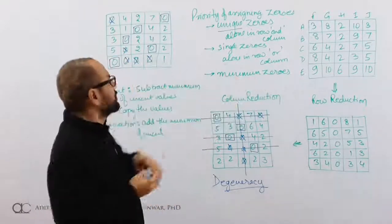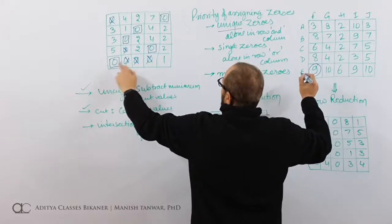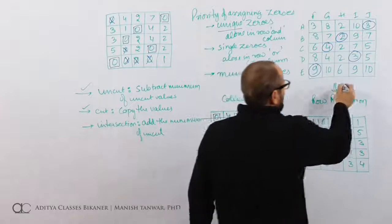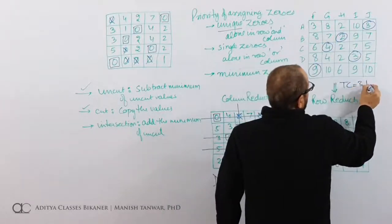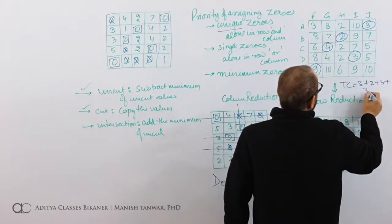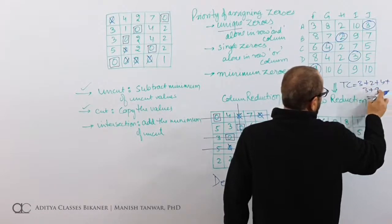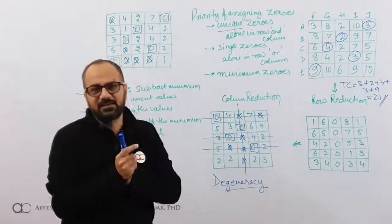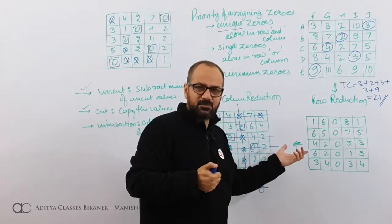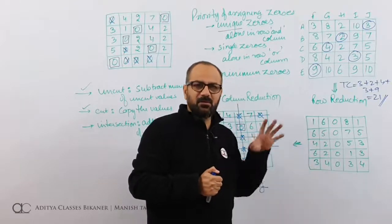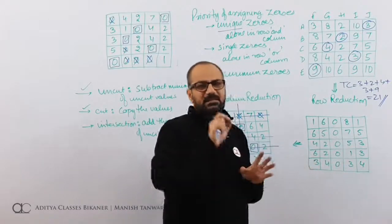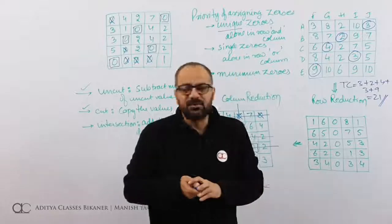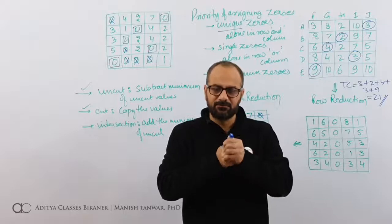Now I can map these assignments to my original table. The original table gives us the assignment cells, and the total cost is 3 plus 2 plus 4 plus 3 plus 9, which equals 21. The best cost for this assignment is 21. I have my 5 desired assignments. In assignment problems, if you are able to make n number of assignments where n is the size of your square matrix, that will definitely be optimum. I am able to make 5 assignments — this is definitely optimum. So this was a question on assignment using the Hungarian method. Until we meet next time, do take care. Thanks for watching. Bye-bye.